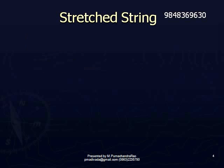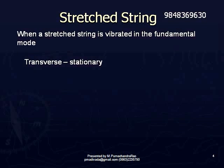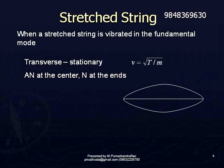Linear density of the wire. In the fundamental mode, an antinode is formed at the center and nodes are formed at the ends. So the wavelength of the wave is λ = 2L. But we have the relation: the frequency n = V/λ. Frequency n equals speed V divided by wavelength λ.